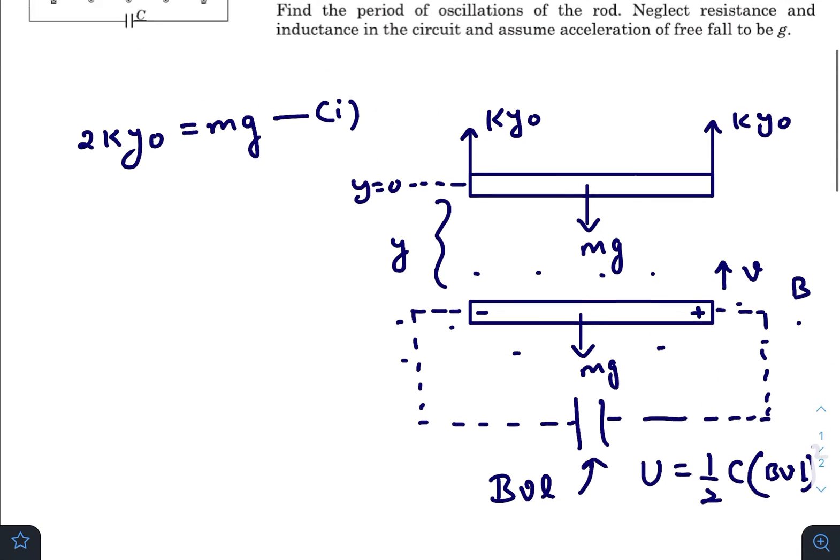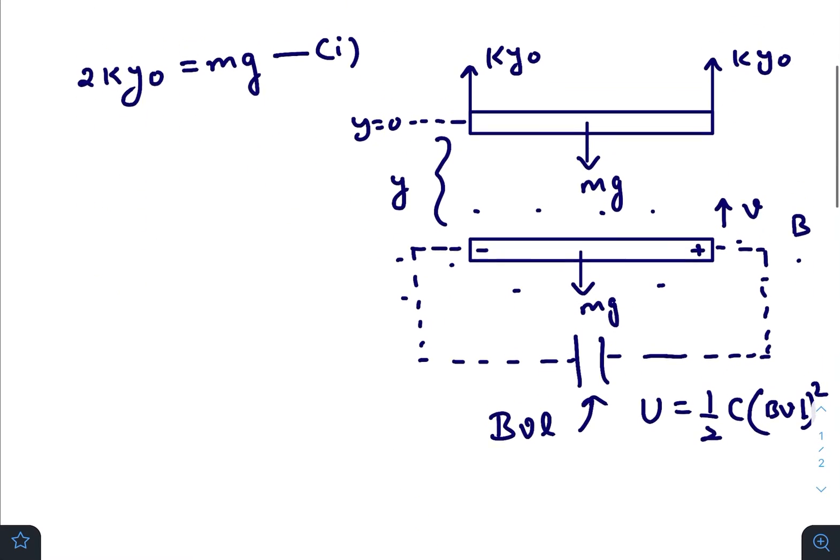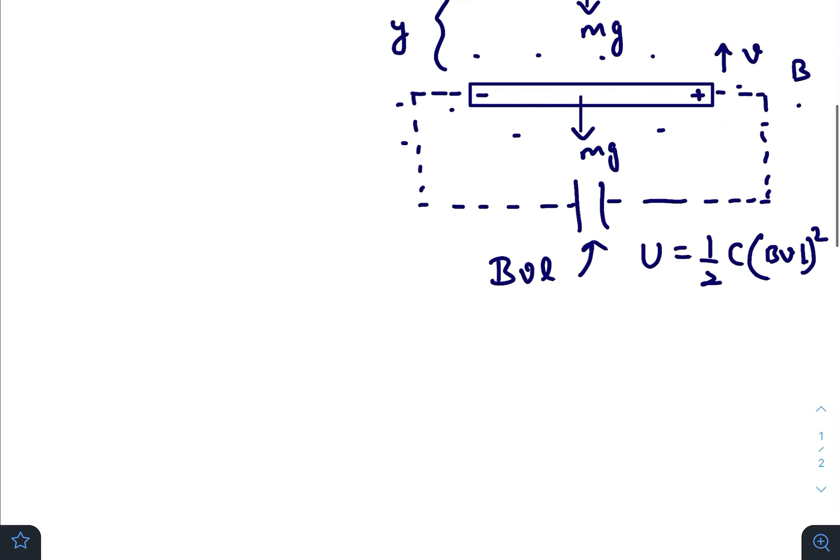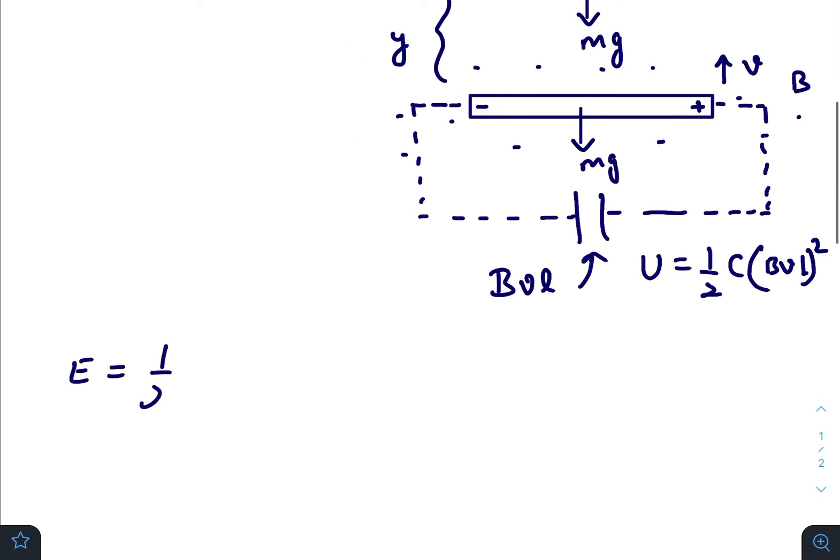Let us write down the equation of energy for the whole system. All the forces here are conservative forces, hence the total energy of the system will remain constant. The energy will consist of the spring potential energy, which is half times 2k times (y_naught plus y) squared.